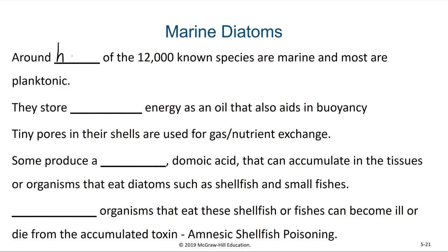Around half of the 12,000 known species of diatoms are marine, and most of the marine diatoms are planktonic. You will occasionally find diatoms in freshwater environments as well, like rivers and lakes and ponds. As diatoms perform photosynthesis and generate excess photosynthetic product, they end up storing that excess energy in the form of oil, as opposed to starch or other carbohydrates, and this oil aids in buoyancy. A phytoplankton wants to ensure that it remains floating at the surface so it can receive the sunlight it needs to continue photosynthesizing.